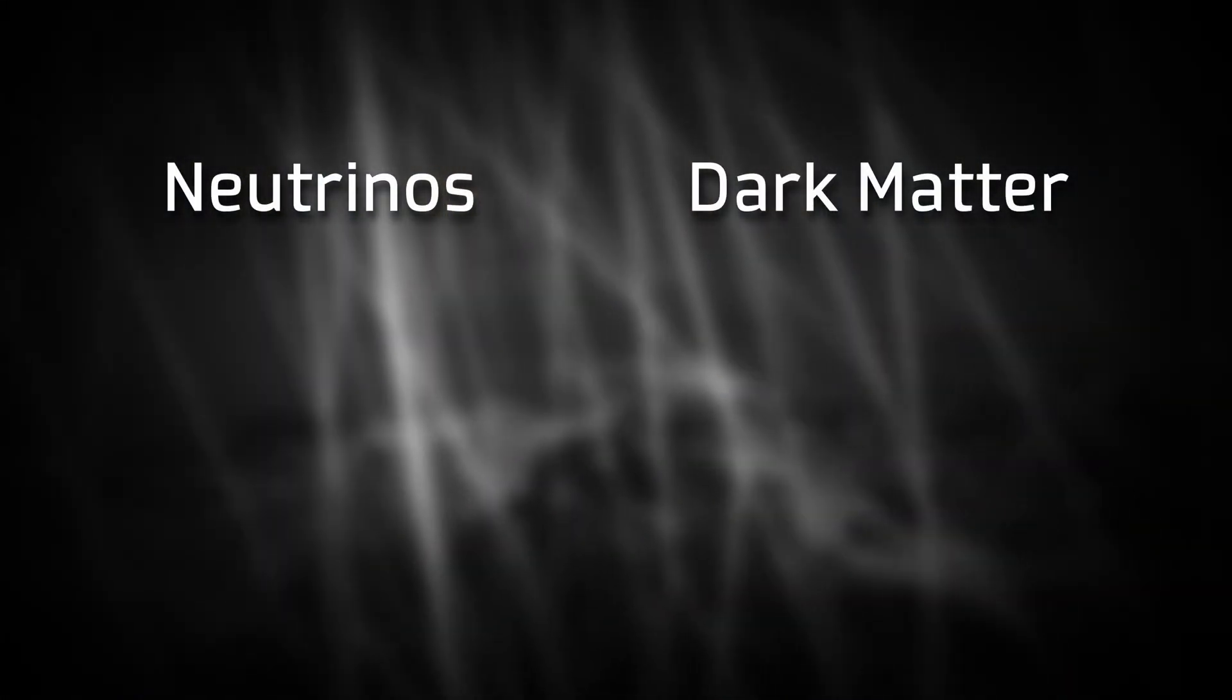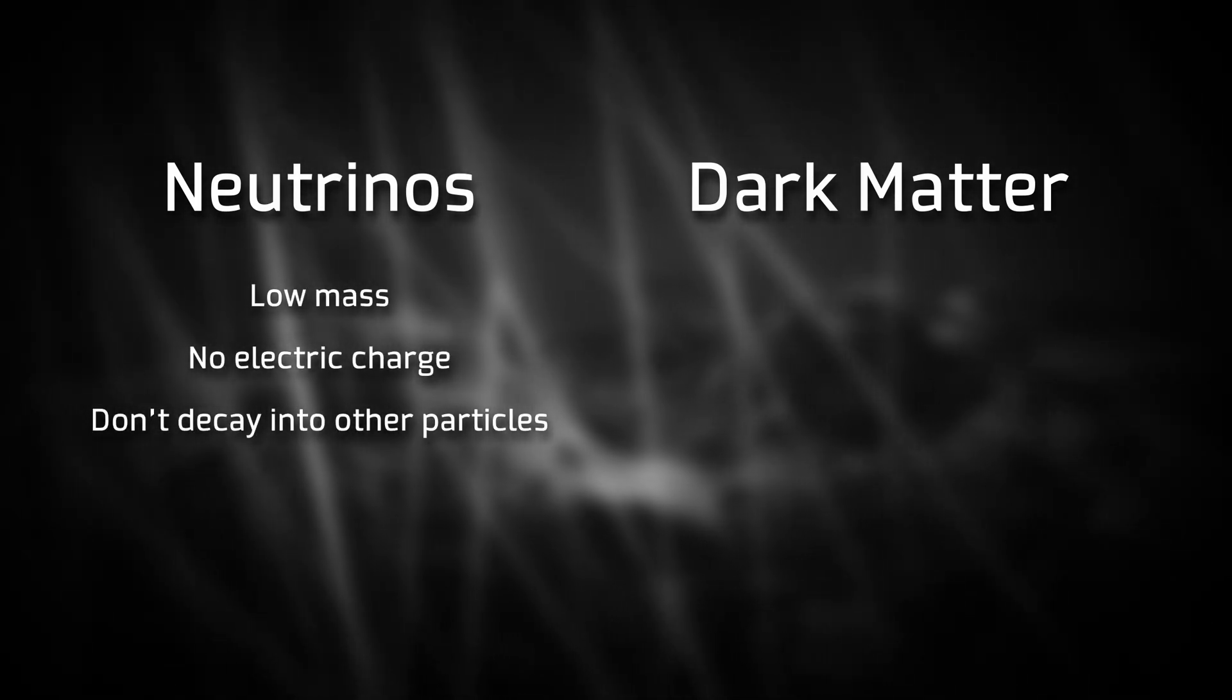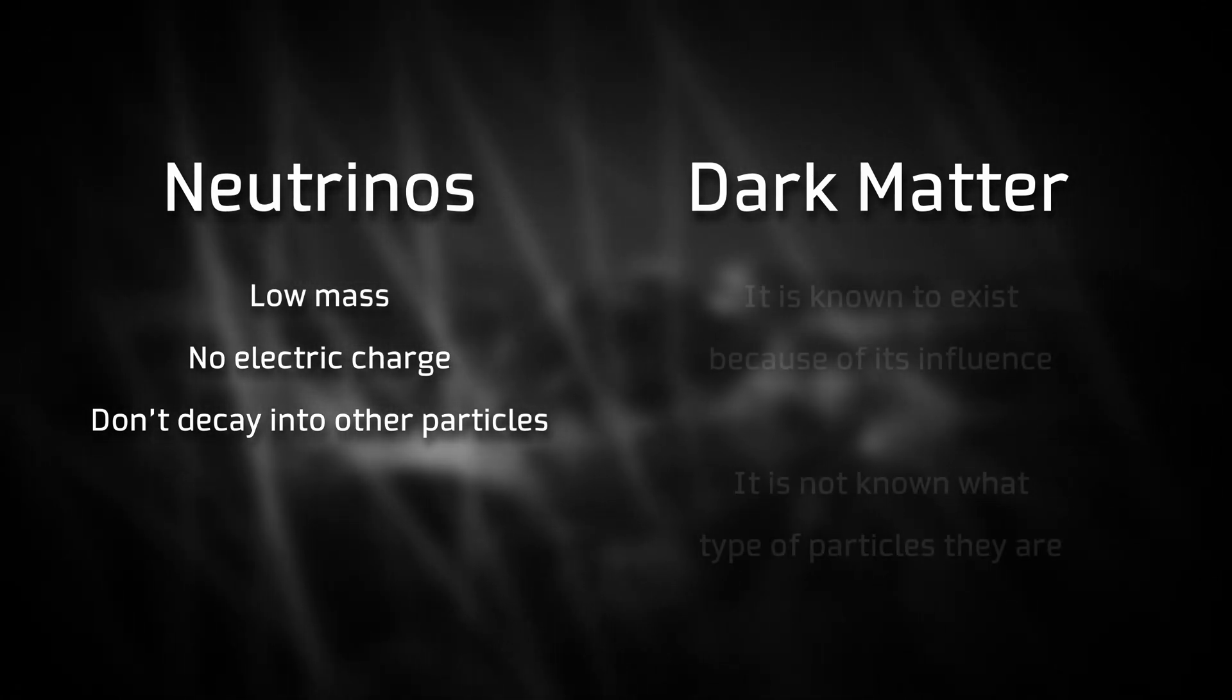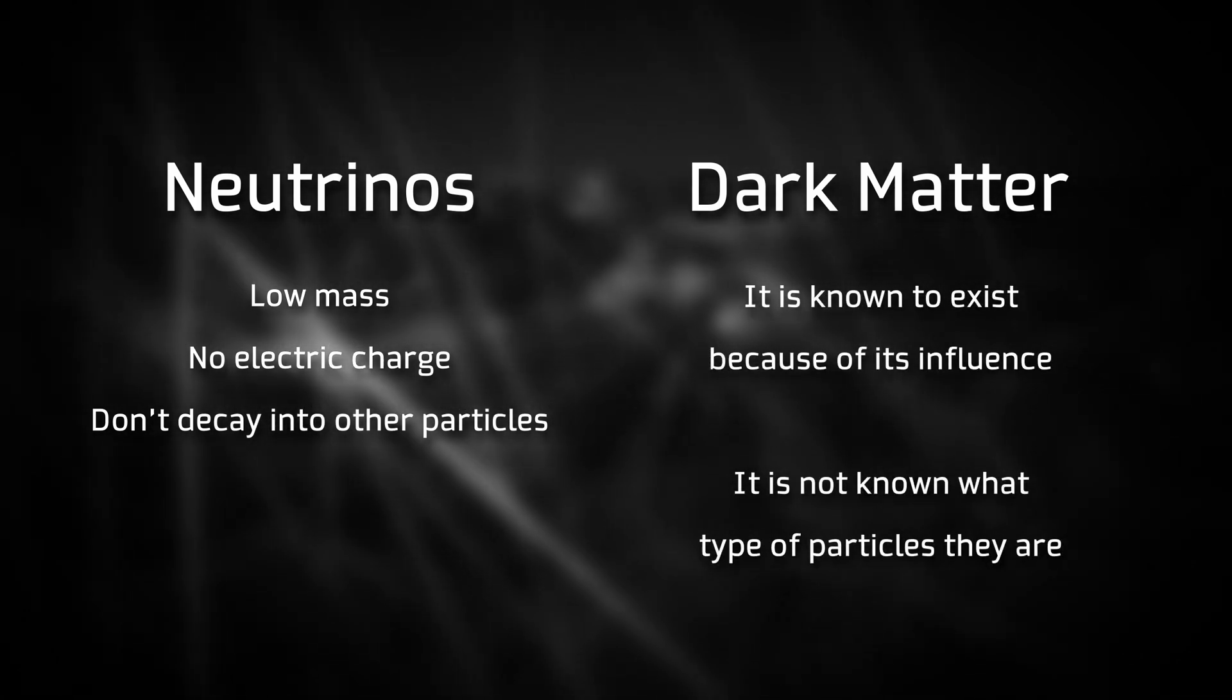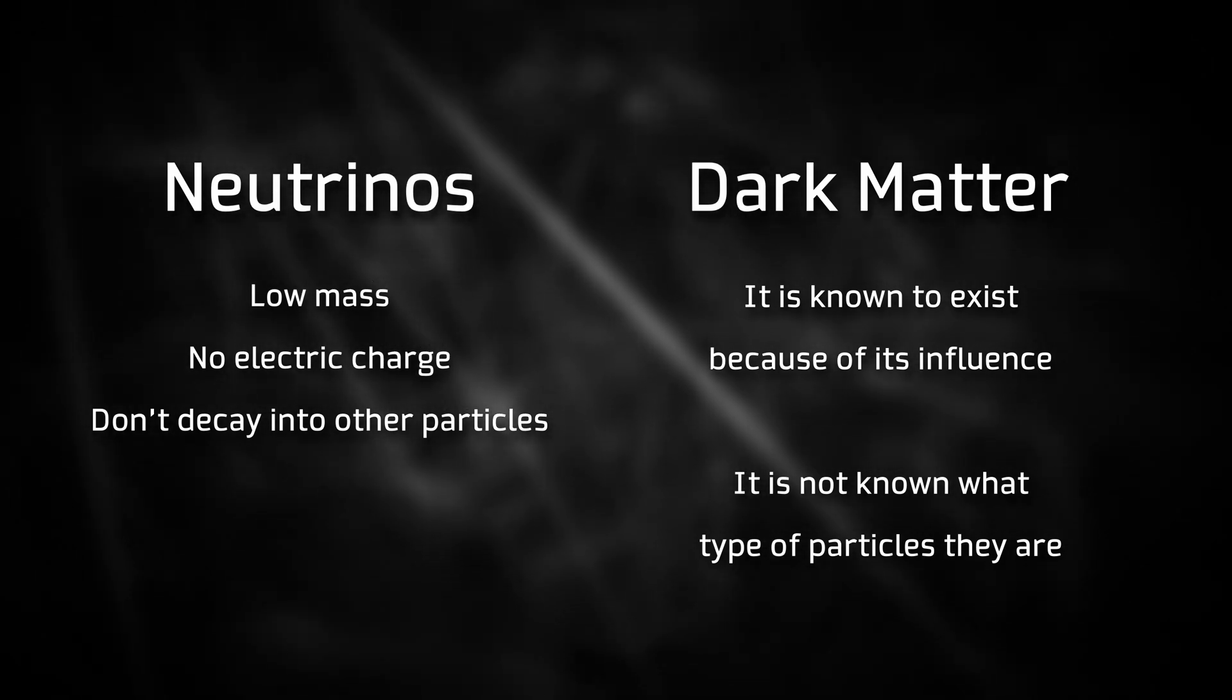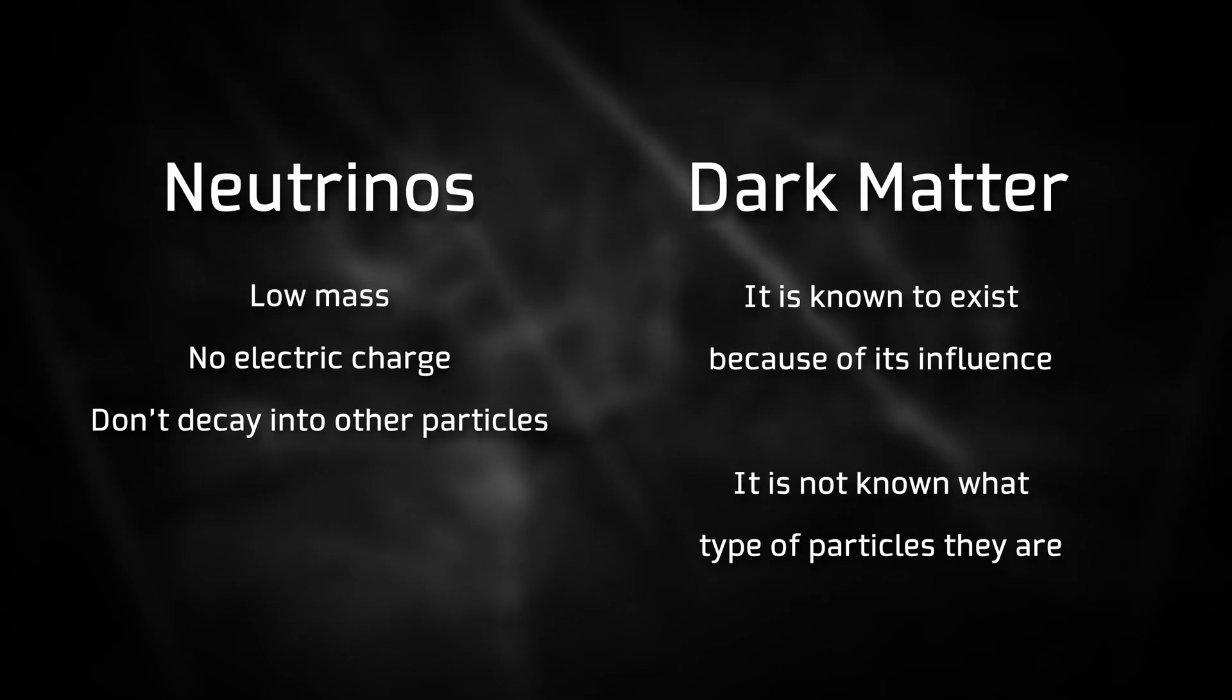Neutrinos are subatomic particles of very low mass, which have no electric charge and do not decay or become any other type of particle. While dark matter is a particle that although it is known to exist in our universe due to multiple astrophysical observations that point to its influence, it is not known exactly what type of particle it is and its behavior does not correspond to any known type of particle.